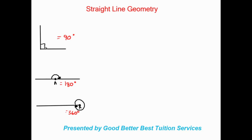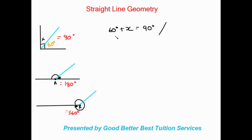So when it comes to different scenarios where they maybe split the angles up, all of a sudden we have two other angles inside our whole angle. In our 90 degrees we have two other angles, so we know the means of identifying sizes of these different angles. Like if this was 60 degrees over here, we'd say 60 degrees plus x is going to be equal to 90 degrees, and our reason is going to be complementary angles.